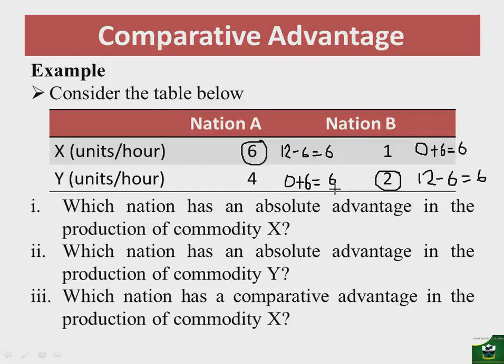The gains for nation B will be six units. So nation A gains two units while nation B gains six units. Now, is there complete specialization in this analysis? Yes — nation A completely specialized in X and nation B completely specialized in Y.